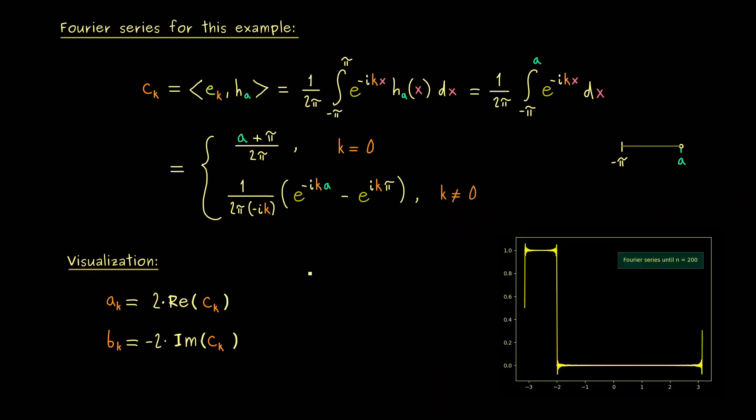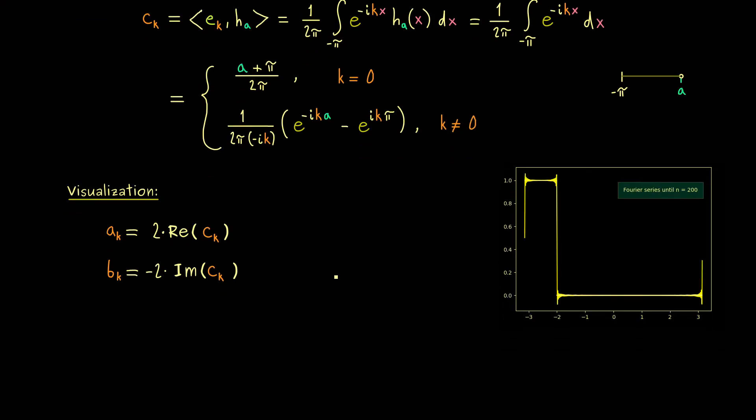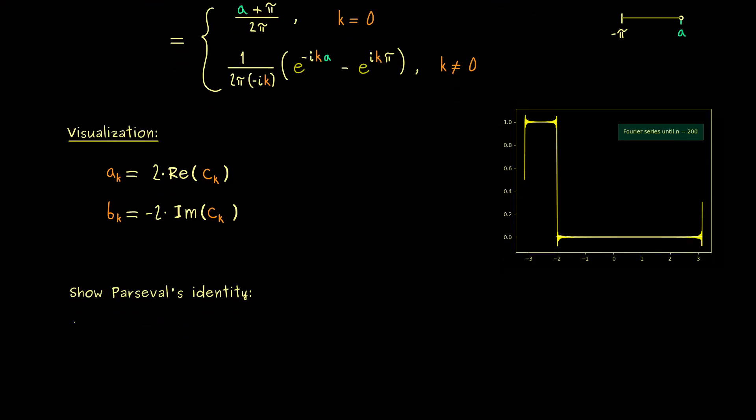Therefore, let's now go to the mathematical proof by showing Parseval's identity. In order to do that, we have to take our coefficients c_k and then we simply have to sum them up. More precisely, we have to sum up the absolute value of c_k squared.